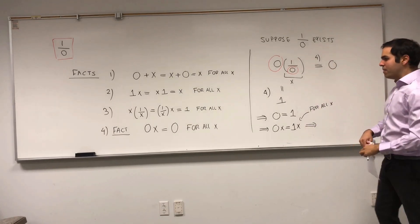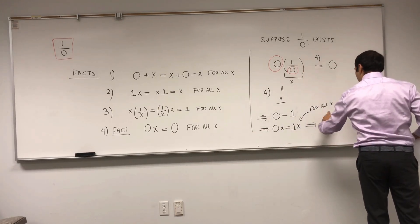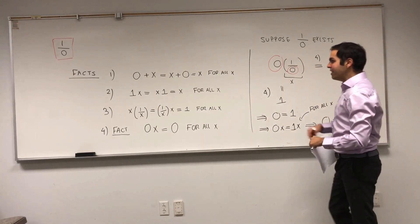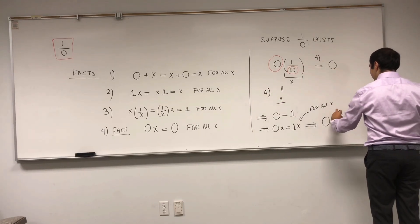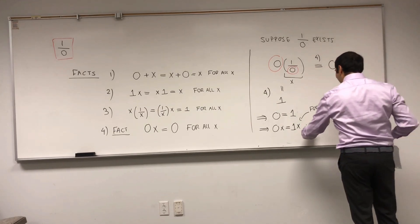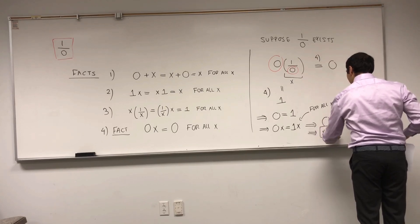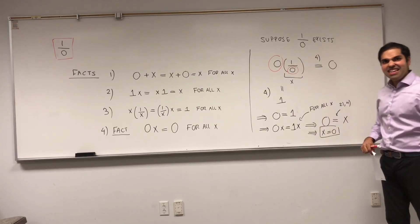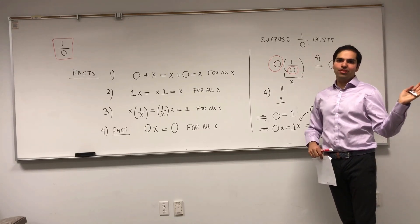But then, remember, 0 times x equals 0. And, 1 times x by property 2 would be equal to x. So, that's property 2 and 4. And, therefore, if you assume that 1 equals 0, we get that any x that you have is automatically equal to 0.